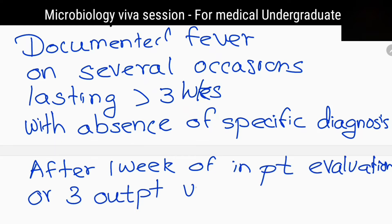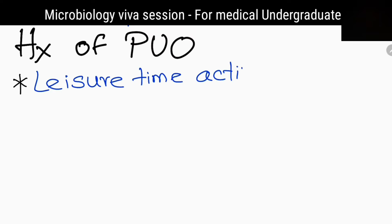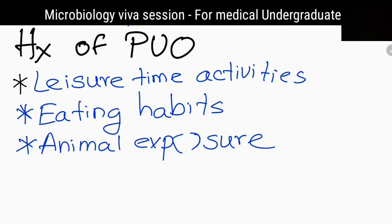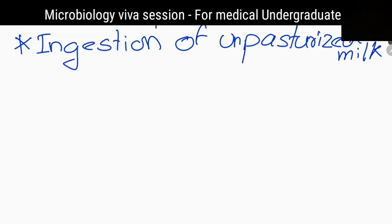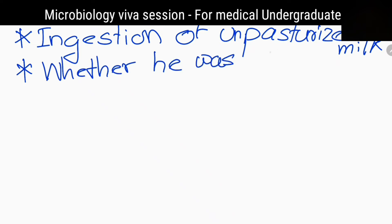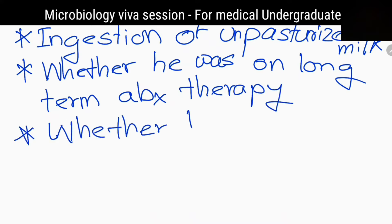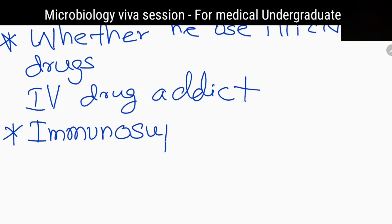What are the special details you would like to ask when taking a history of a patient with pyrexia of unknown origin? Leisure time activities, eating habits, animal exposure, ingestion of unpasteurized milk, whether the patient was on long-term antibiotics, whether he used illicit drugs, whether he is an intravenous drug addict, whether he is on immunosuppressive therapy, and his sexual history.